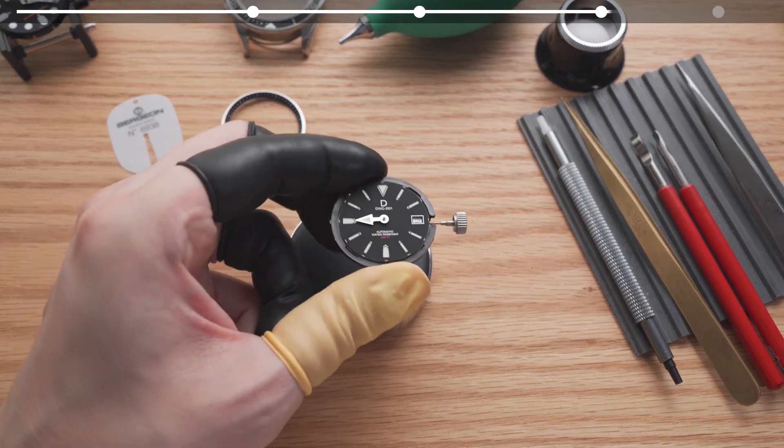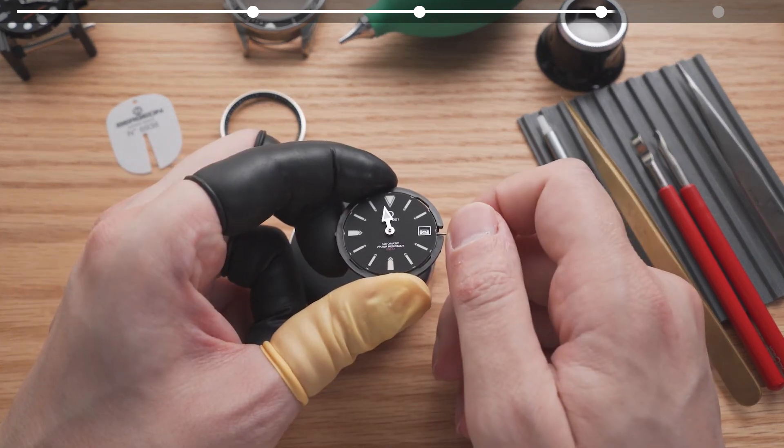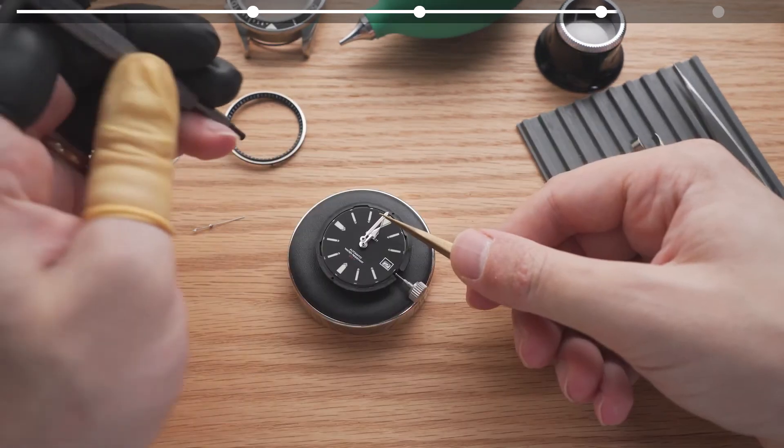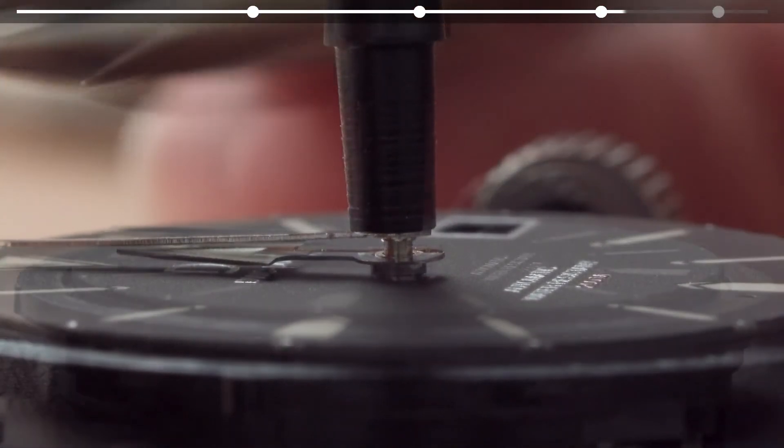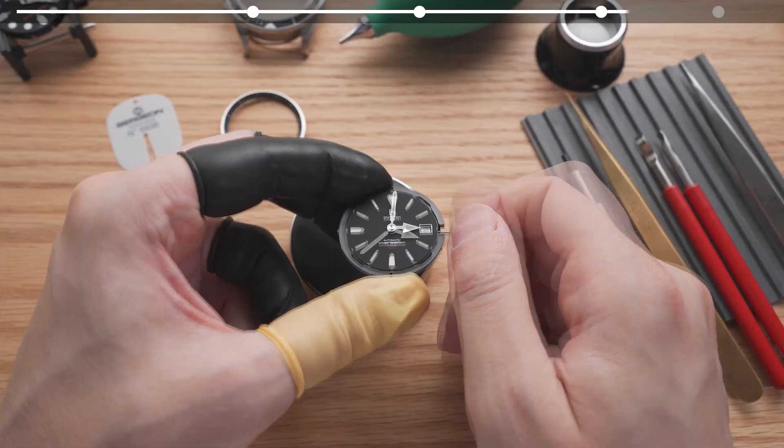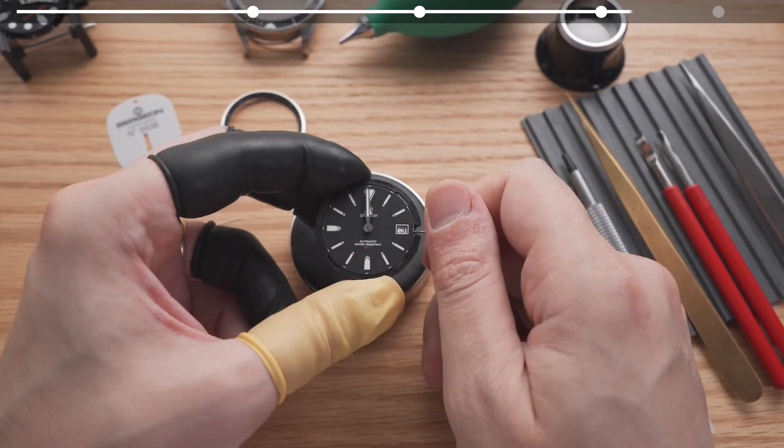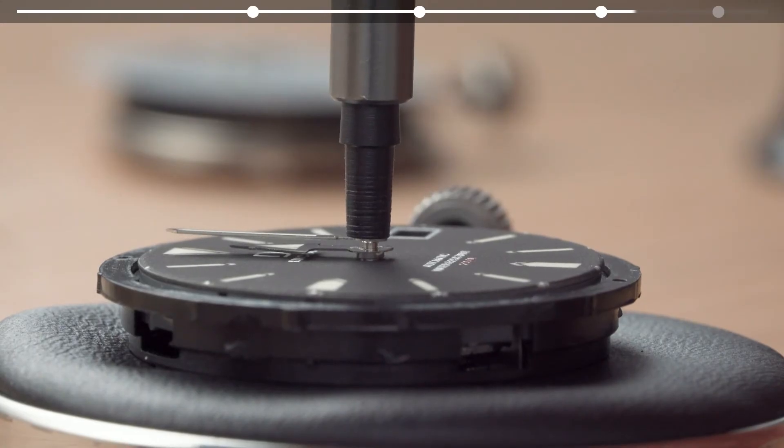Onto the minute hand. Set the hour hand to 12 o'clock and then install the minute hand pointing at the 60 minute mark. Loosely attach it to check the alignment at 3, 6, 9 and 12 o'clock. Then we can apply pressure to set the minute hand.